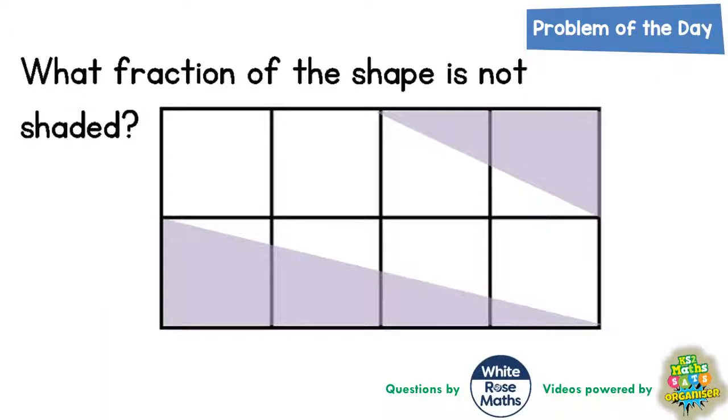Welcome problem solving fans to another problem of the day. This question is asking what fraction of the shape is not shaded. Now the fraction that is not shaded is much bigger than the fraction that is shaded, but as you can see there are no whole squares to count, we've just got parts of squares.